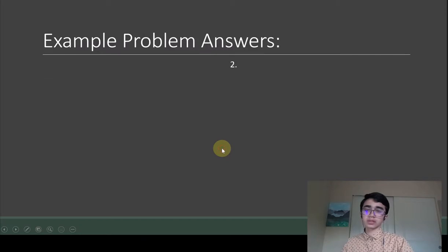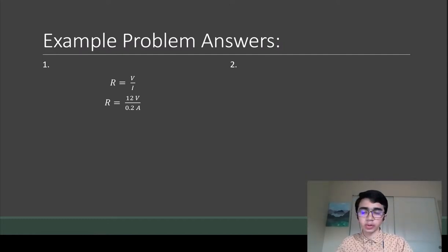Let's get into the answers. For the first one, we're just going to use Ohm's Law. Resistance equals voltage over current. Plug in the values we know - we know the voltage is 12 volts and the current is 0.2 amps.